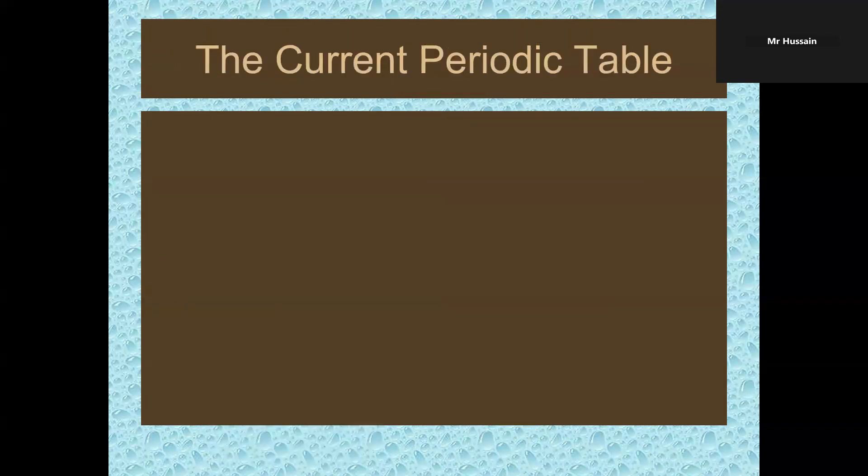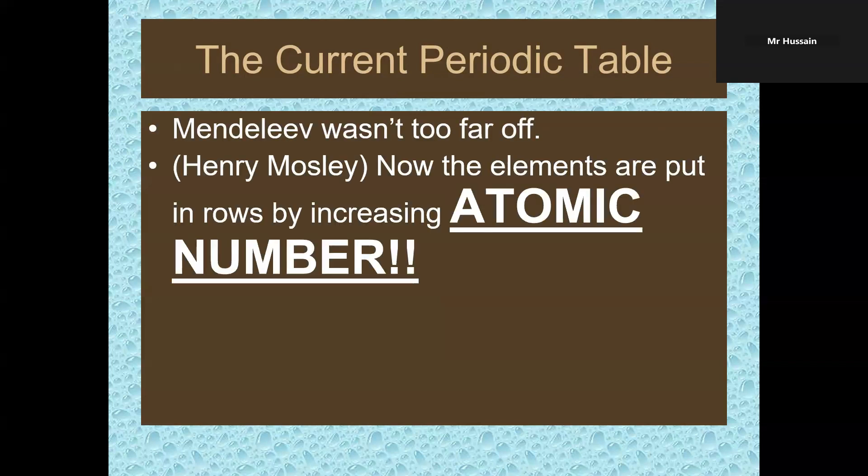The periodic table we are using nowadays, the current periodic table or modern periodic table, was designed by Henry Moseley. What's the difference between Dmitry Mendeleev and Henry Moseley's periodic table? Henry Moseley put all elements in rows by increasing atomic number.